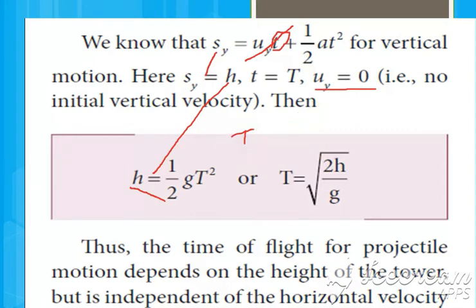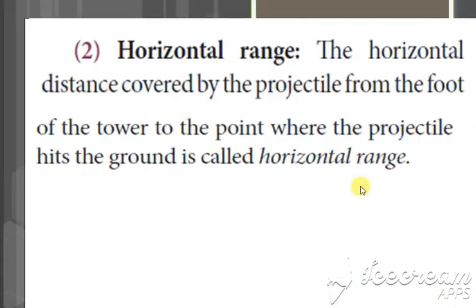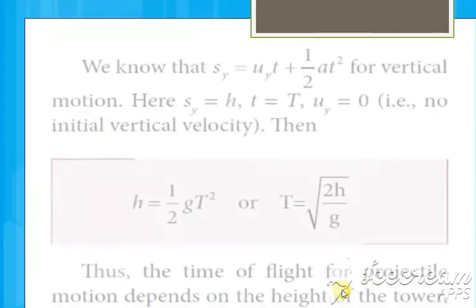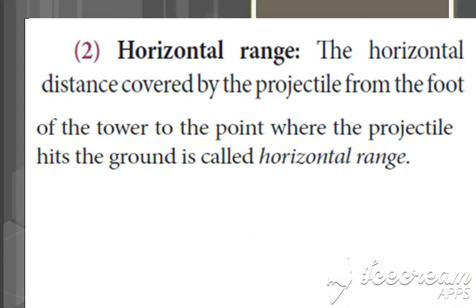Next is the horizontal range — the distance covered by the projectile. From the foot of the tower to the point where the projectile hits the ground is the horizontal distance, and that is called the horizontal range.